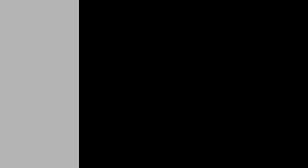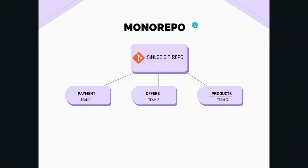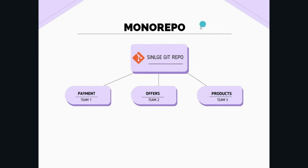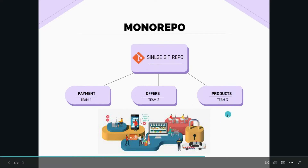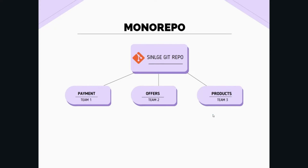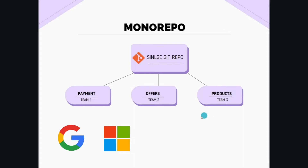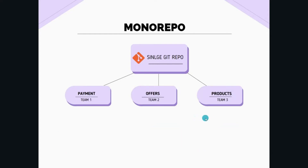A mono repo is a single git repository that holds the source code for multiple applications and libraries. These applications are often logically independent and run by different teams. Companies like Google, Microsoft, Facebook, and Twitter are known to run large mono repos.